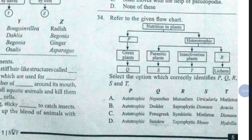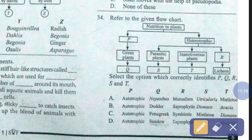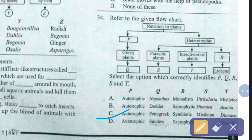Question number 34. Refer to the given flowchart. Select the option which correctly identifies P, Q, R, S and T. The correct answer is option number C — P: autotrophic, Q: fenugreek, R: symbiotic, S: mistletoe, T: dionaea.